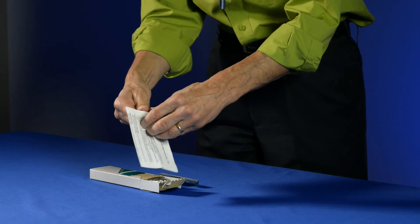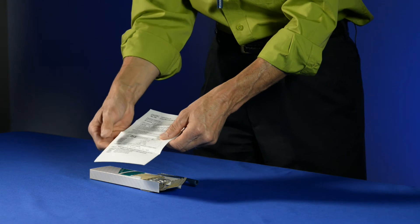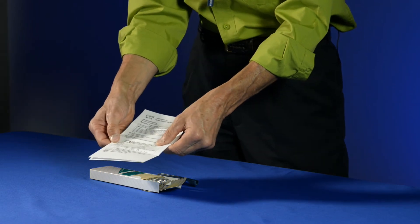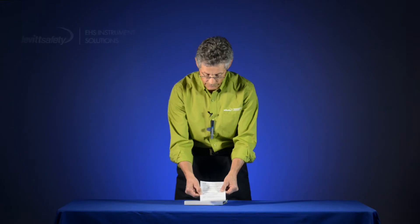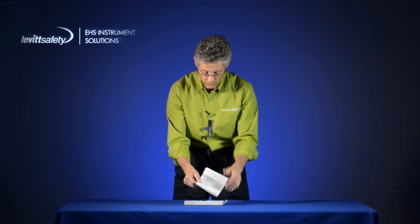And the other is the instruction card. And the instruction card is very important to read because it tells you all about the detector tube, the range that you can use it in, the sampling hours, the detection limit, any cross interferences, any effects of humidity or temperature. So it's well worth your time to read that and understand what the tube can do prior to using it.